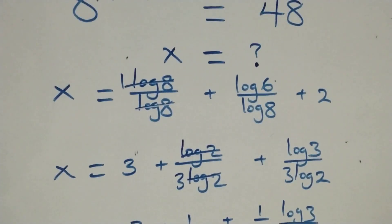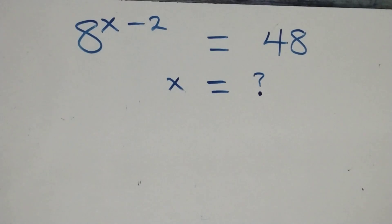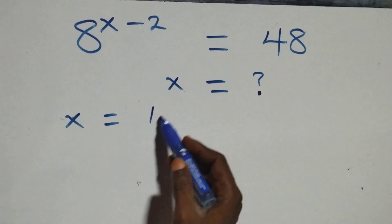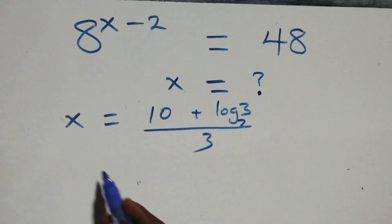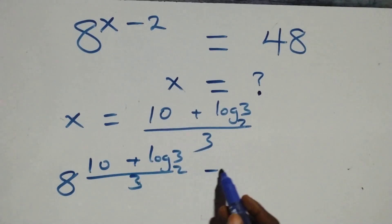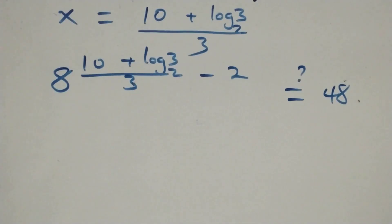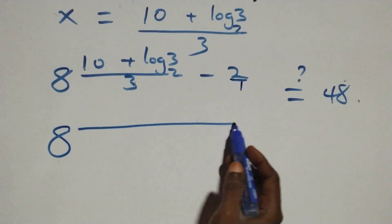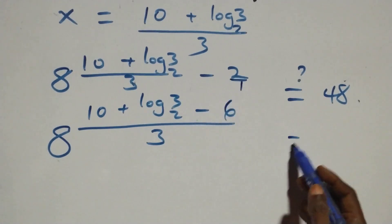Now let's verify this answer satisfies the original problem. We substitute x equals (10 plus log base 2 of 3) all over 3. We have 8 raised to power (10 plus log base 2 of 3) all over 3, minus 2. This equals 48. Bringing the power together, 8 raised to power (10 plus log base 2 of 3 minus 6), all over 3, equals 48.